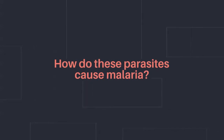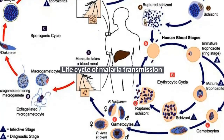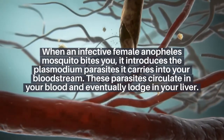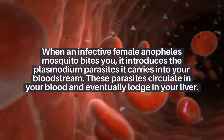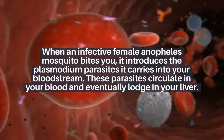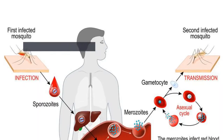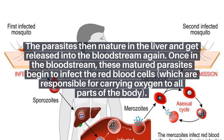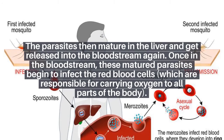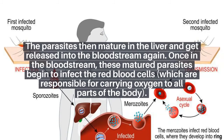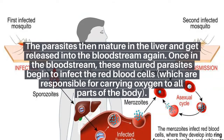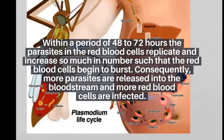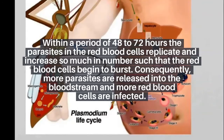How do these parasites cause malaria? Life cycle of malaria transmission. When an infective female Anopheles mosquito bites you, it introduces the Plasmodium parasites it carries into your bloodstream. These parasites circulate in your blood and eventually lodge in your liver. The parasites then mature in the liver and get released into the bloodstream again. Once in the bloodstream, these matured parasites begin to infect the red blood cells, which are responsible for carrying oxygen to all parts of the body. Within a period of 48 to 72 hours, the parasites in the red blood cells replicate and increase so much in number such that the red blood cells begin to burst.